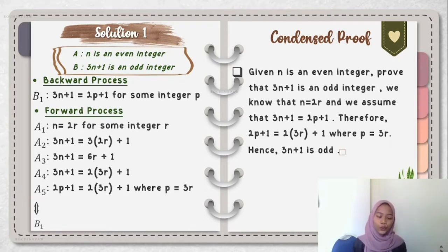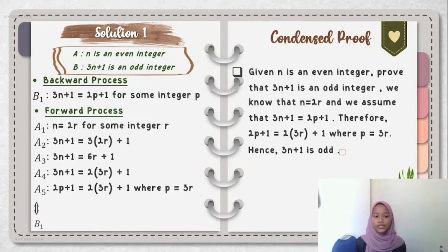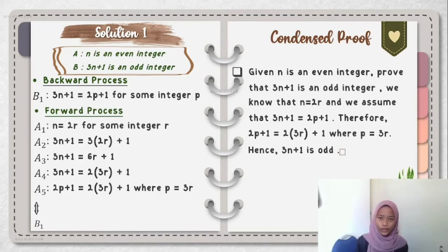For A2: 3N plus 1 is equal to 2 multiplied by 2R plus 1. Why 2R? Because in A1, N is equal to 2R, so we substitute N with 2R. In A3, we get 6R plus 1. In A4, we factorize again: 2 multiplied by 3R plus 1, so that this statement equals 2P plus 1. In A5: 2P plus 1 is equal to 2 multiplied by 3R plus 1, where P is equal to 3R. Statement A5 is equivalent to B1, which is 3N plus 1 is equal to 2P plus 1.